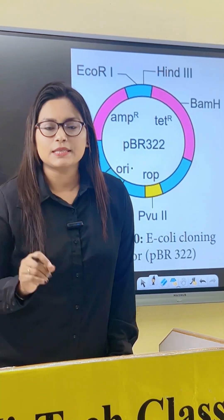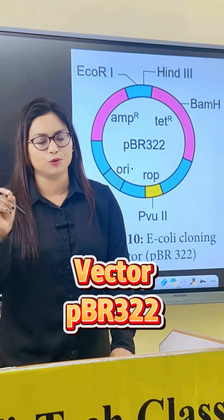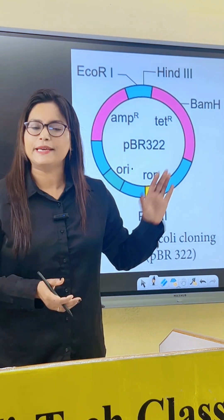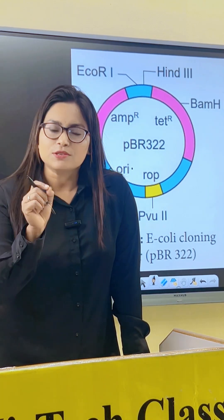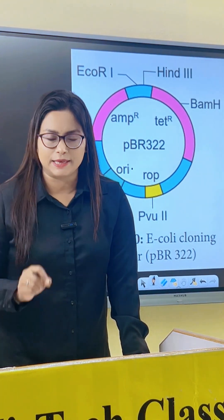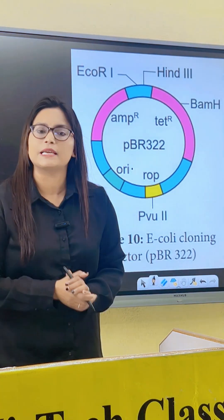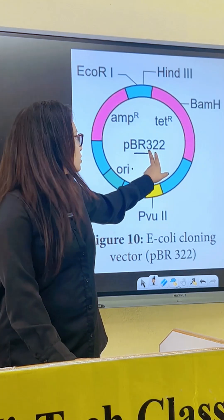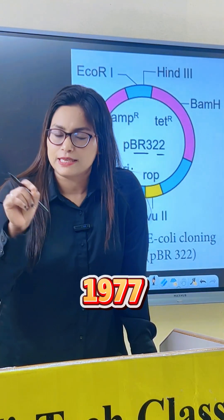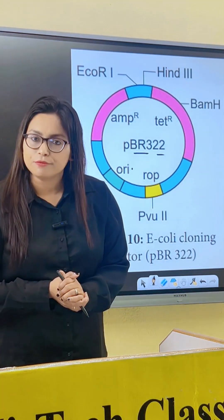Today we will discuss the vector pBR322. As visible, it is circular and double-stranded. It was constructed and developed by two scientists named Bolivar and Rodriguez — that is why it is named pBR (Bolivar and Rodriguez) 322. It was constructed in 1977 at California University.